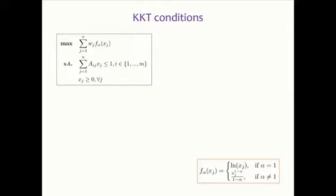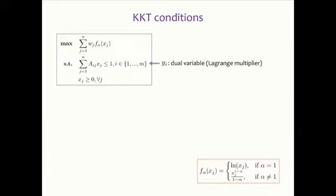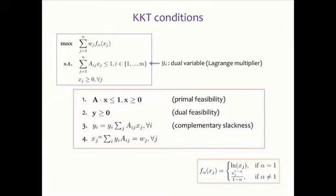Important for the analysis are the KKT conditions. With each constraint we associate a Lagrange multiplier, referred to as a dual variable. The KKT conditions are: primal feasibility, dual feasibility, complementary slackness, and a fourth condition obtained when maximizing the Lagrangian. This fourth KKT condition will be the most important one for the algorithm.